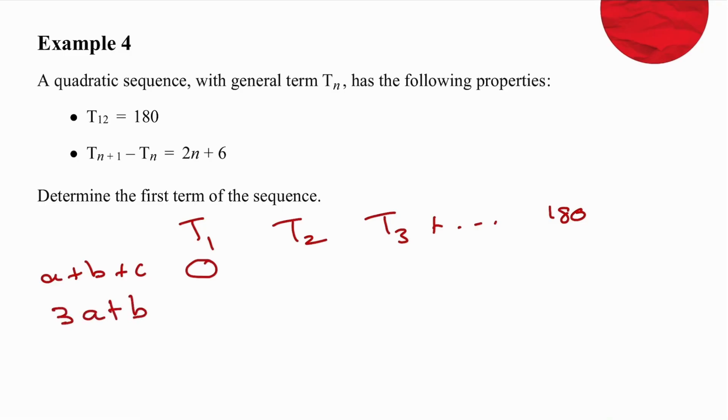3A plus B is the value of first difference, which we need to get our hands on. And the first difference is going to be T2 minus T1, which means it's going to be 2 times 1 plus 6, because the n value in the formula is the lower n of the two terms. So, our first difference is going to be 8. The next first difference is going to be the same calculation again. But now, we are going to work with 2 when we substitute, so we will get 10.